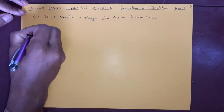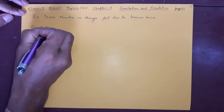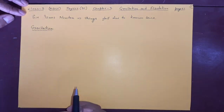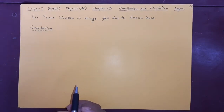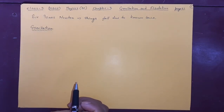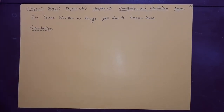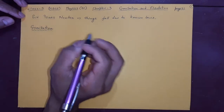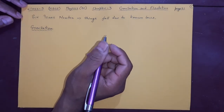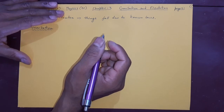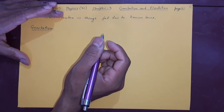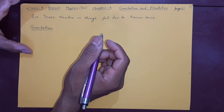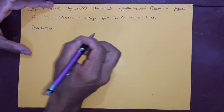We are going to study the topic of Gravitation. Isaac Newton first of all saw an apple falling down from a tree, and he thought that this happens because of the force of gravity of the earth — there is a force associated with it which is called gravity.